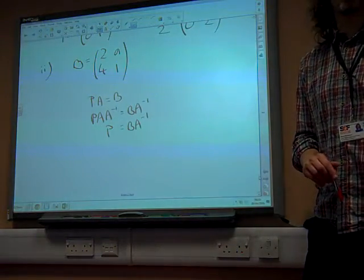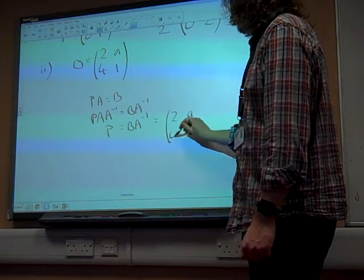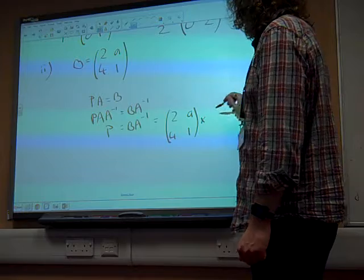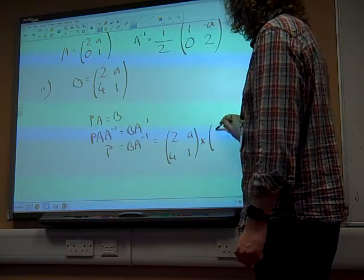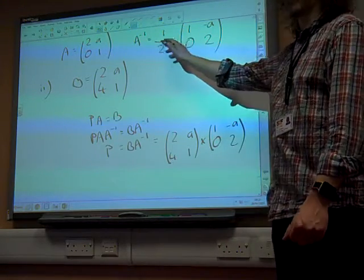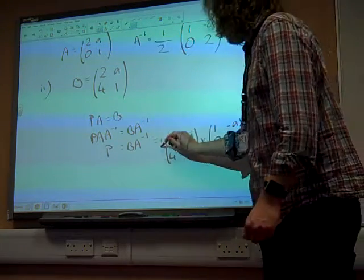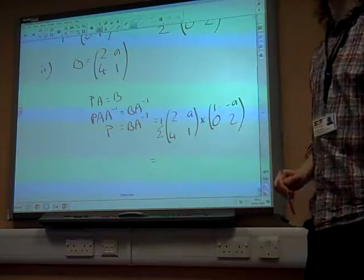So that's what we must be doing here. We must be doing B, 2A, 4, 1, times by the inverse of our matrix, which is 1 minus A, 0, 2. And of course, that inverse has a half in front of it, so we're going to multiply by a half, as well as part of that multiplication.